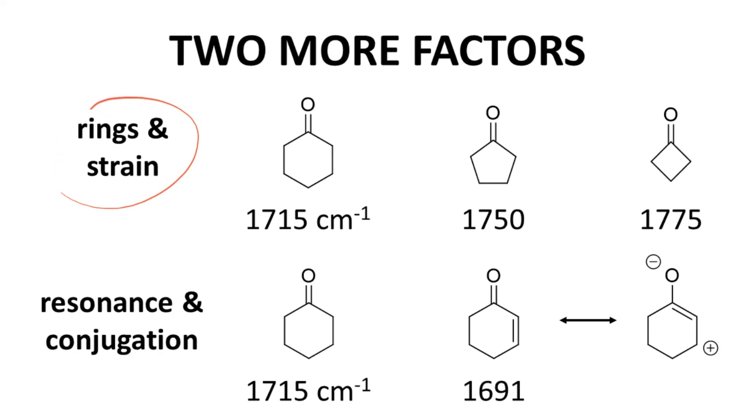The first is a ring. Cyclohexanone shows up at about 1715, which is fairly typical of all ketones. Cyclic ketones with ring strain tend to move to a higher position. Cyclopentanone is at 1750. Cyclobutanone is at 1775.